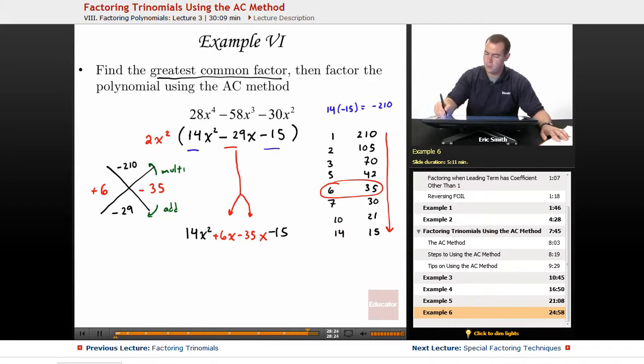Now we can continue with our factor by grouping. Grabbing these first two and looking at what they have in common. I see that we can take out a 2x. That would leave us with a 7x plus 3.